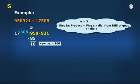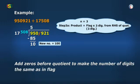that is for step 3a, we cross multiply last 3 digits of quotient with flag and each time, if necessary, we add zeros before quotient to make number of digits same.